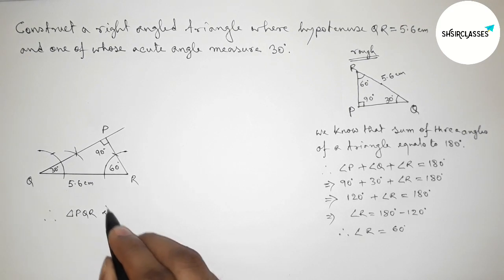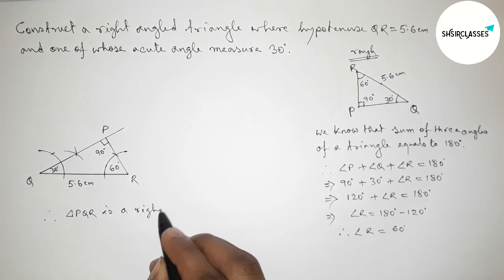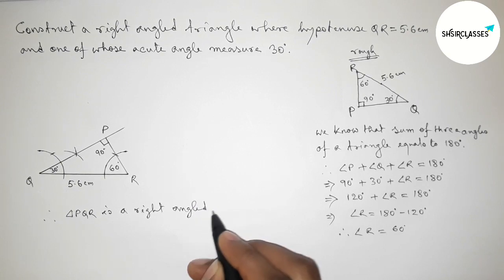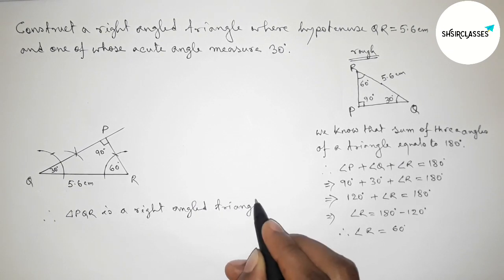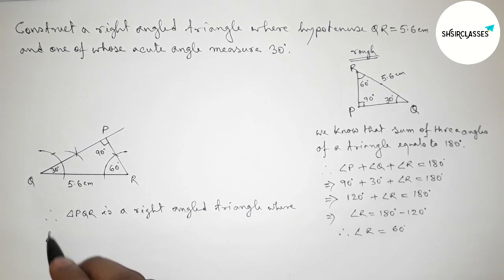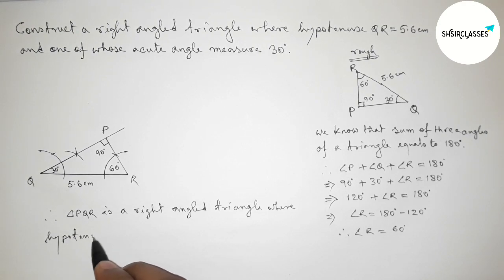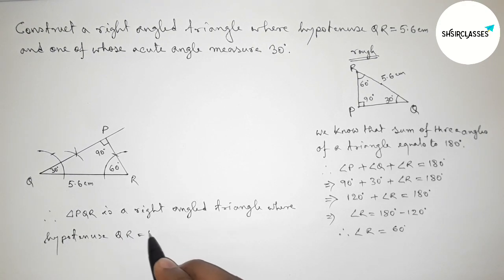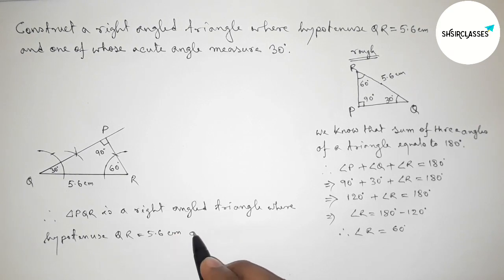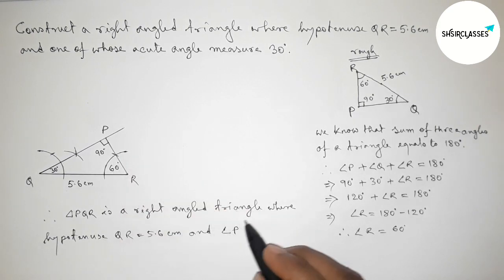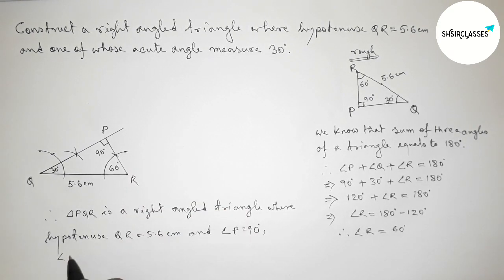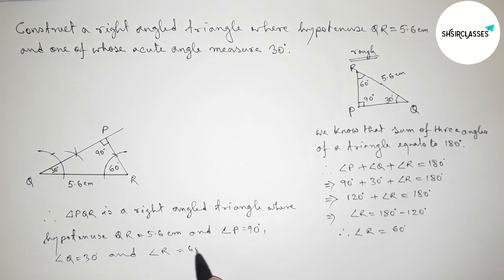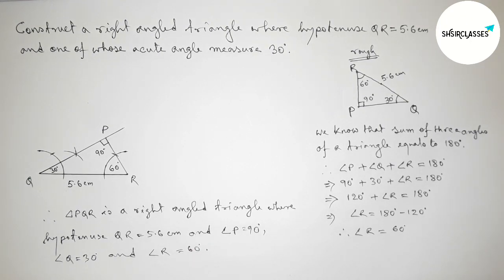Therefore, triangle PQR is a right-angle triangle where the hypotenuse QR equals 5.6 centimeters, angle P equals 90 degrees, angle Q equals 30 degrees, and angle R equals 60 degrees. That's all — thanks for watching. If this video was helpful, please share it.